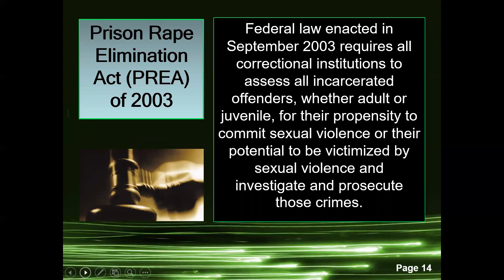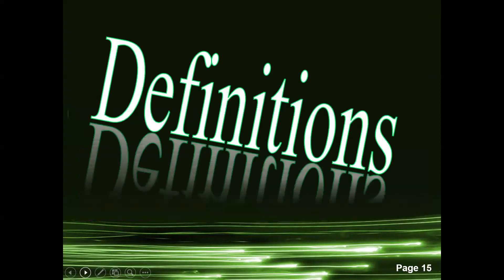The Prison Rape Elimination Act of 2003 was enacted in response to many allegations of prison rape occurring across the country. Federal law enacted in September 2003 requires all correctional institutions to assess all incarcerated offenders, whether adult or juvenile, for their propensity to commit sexual violence or their potential to be victimized by sexual violence, and to investigate and prosecute those crimes.